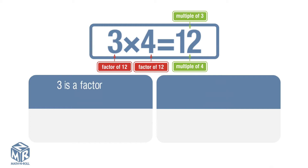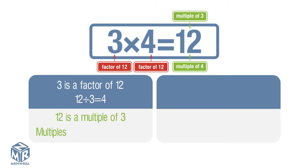3 is a factor of 12 because 12 divided by 3 equals 4 with no remainder. To show that 12 is a multiple of 3, we list the multiples of 3. We do this by multiplying 3 by 1, 2, 3, 4, and so on. 12 is on the list, so 12 is a multiple of 3.